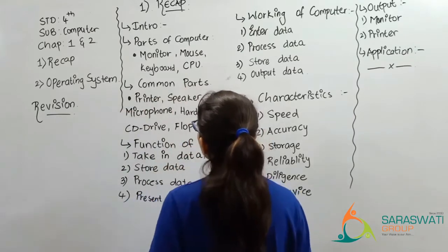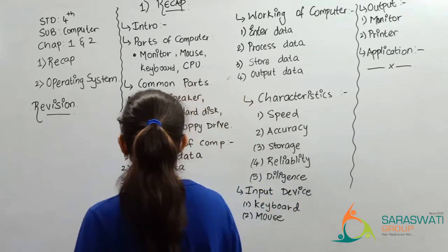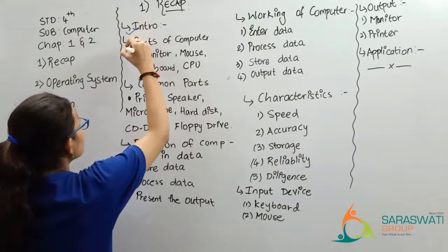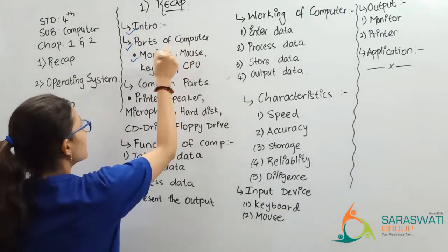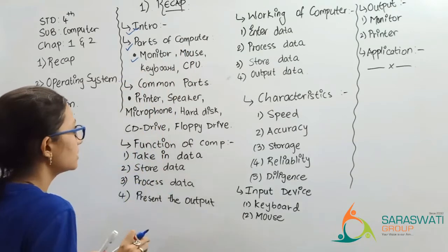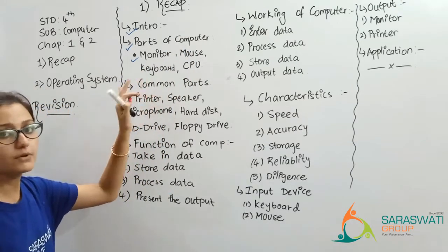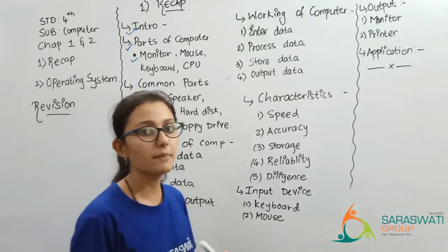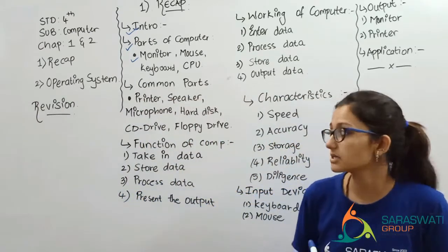Next are some common parts of the computer. We have learnt introduction, parts of computer — monitor, mouse, keyboard, CPU — all of them are known as common parts of the computer.